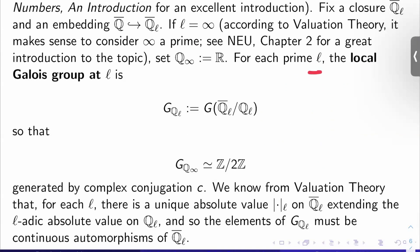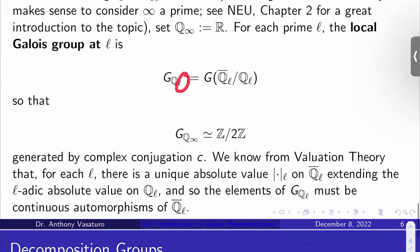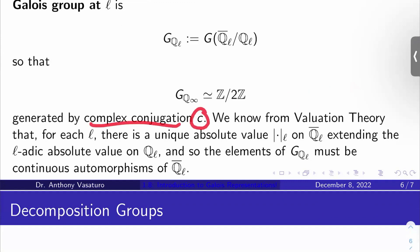For each prime ℓ, the local Galois group at ℓ is just G_{Q_ℓ}, and it's what you think it is. It's the absolute Galois group of Q_ℓ. So, for example, if ℓ is infinity, G_{Q_∞} would just be ℤ/2ℤ, right? Because it would just be the Galois group ℂ over ℝ. So that's a group of order two generated by complex conjugation c.